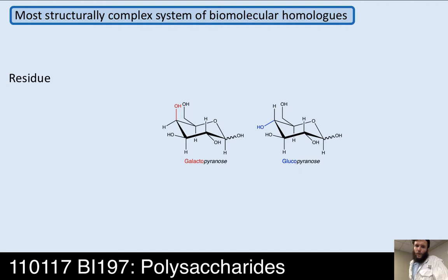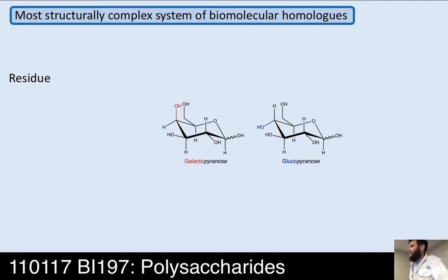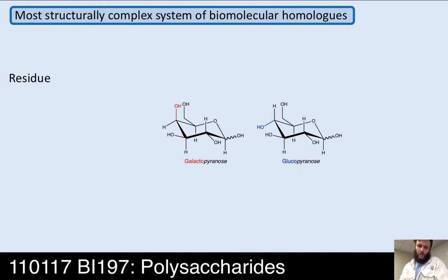So what do I mean by this? Carbohydrates can vary by residue. Here I'm showing you galactopyranose, which has that axial OH at C4, and gluco, which has the equatorial. In the very beginning of this unit, I started off with the hexose tree, showing the whole tree of different carbohydrates sorted by the stereochemistry at each of the carbons.